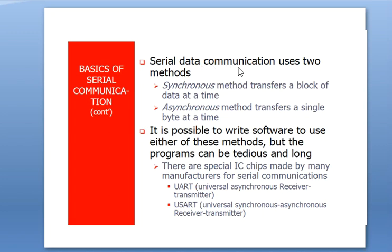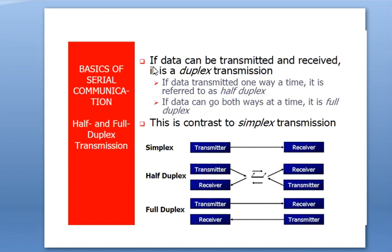Serial data communication uses two methods: synchronous and asynchronous. In the synchronous method, a block of data is transferred at a time, while in asynchronous, a single byte is transferred. To perform serial communication synchronously or asynchronously, special hardware ICs are available — such as UART or USART — which are used for serial data transmission in the 8051 microcontroller. Serial communication can be used for longer distances.